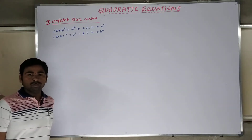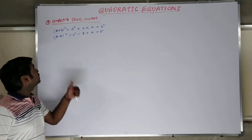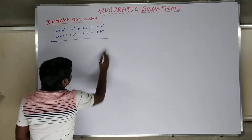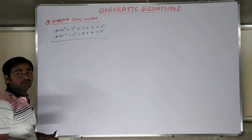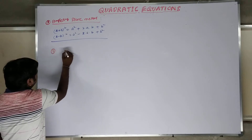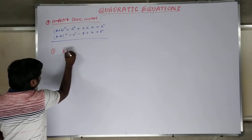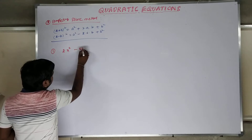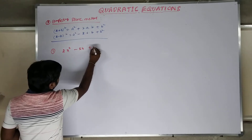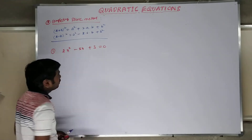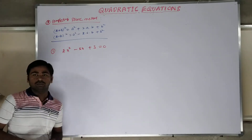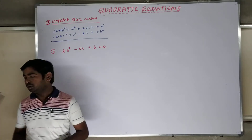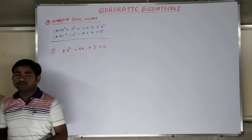So how do we solve a given problem using the Complete Square Method? Let us take an example — the first problem. Let us take: 2x squared minus 5x plus 3 is equal to 0. The concept is simple, but the steps are very important.